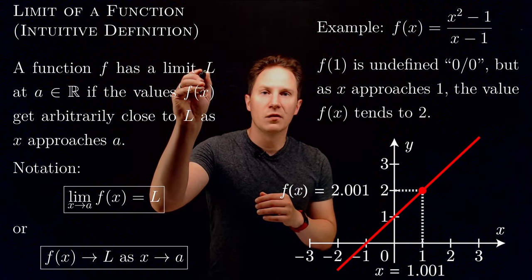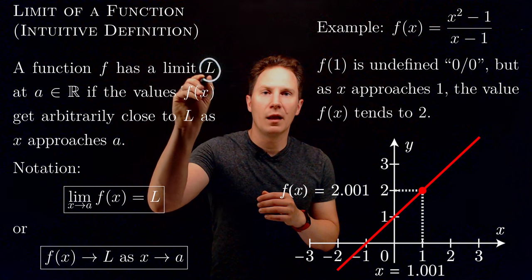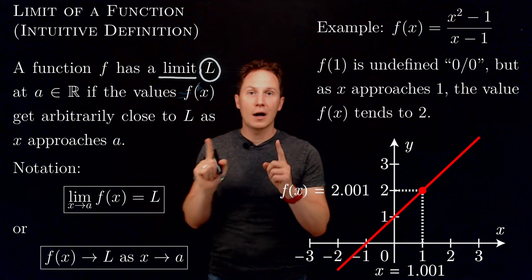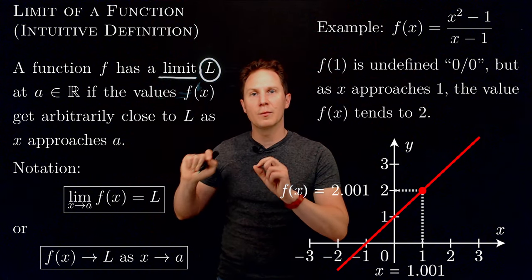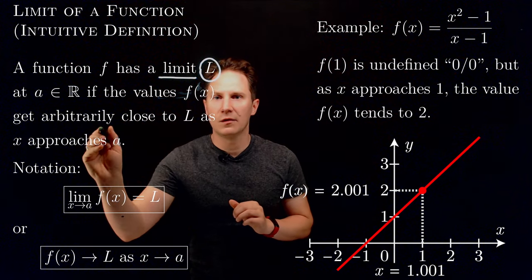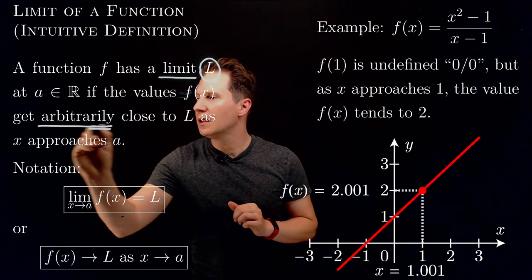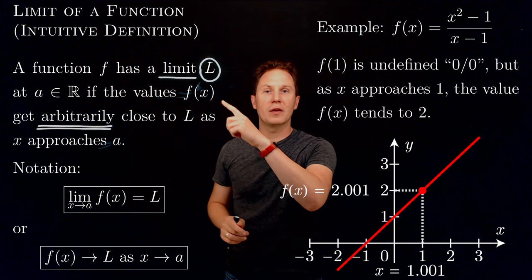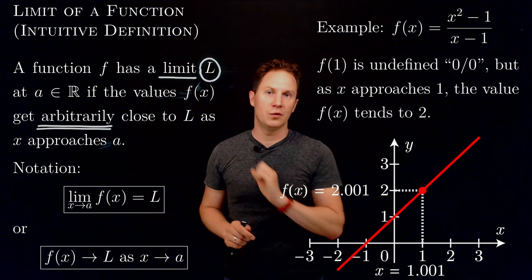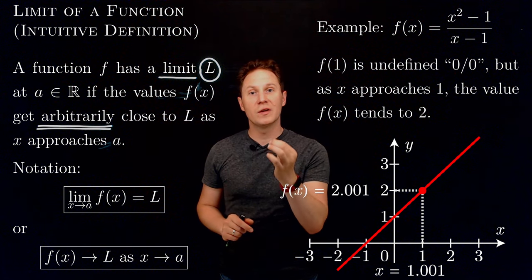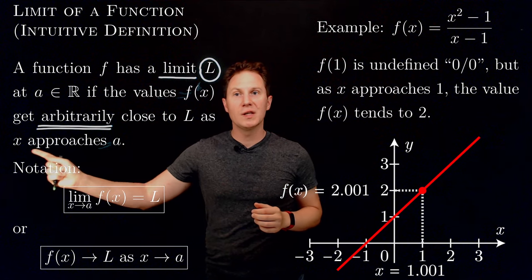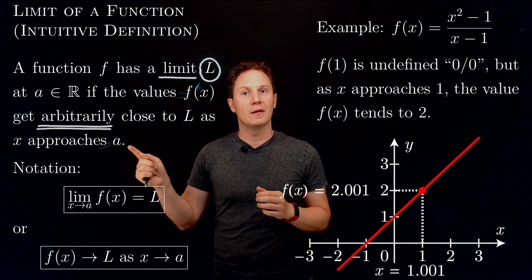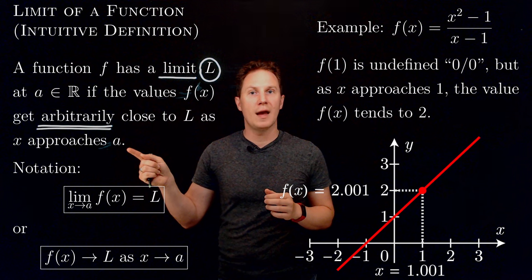In this definition, the number L is the limit of our function f at the point a, and the heart of the definition — the word that makes this definition work — is the word 'arbitrarily.' Arbitrarily here means you can have f(x) get as close to L as you want, to any precision you like, by choosing input numbers x close enough to the point a on the number line.